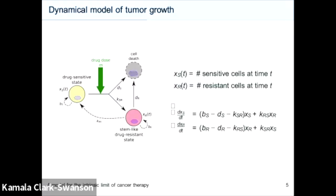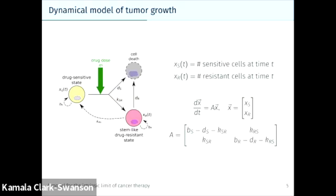Here's our mathematical model. It is a very simple linear ODE — perhaps the most simple dynamical system you can get. We have two populations: X sub S, the number of sensitive cells at time T, and X sub R, the number of drug-resistant cells at time T. The dynamical system equations include rate constants describing birth and death rates: B sub S and D sub S for sensitive cells, B sub R and D sub R for resistant cells. We also have phenotype switching rates: K sub SR, the rate at which drug-sensitive cells are induced into the resistant state, and K sub RS, the resensitization rate. We write this ODE in matrix-vector form with rate matrix A, which just contains our rate constants.